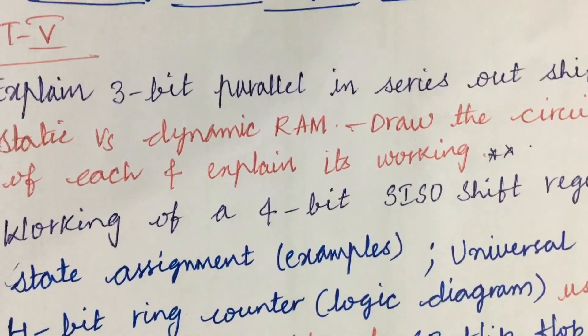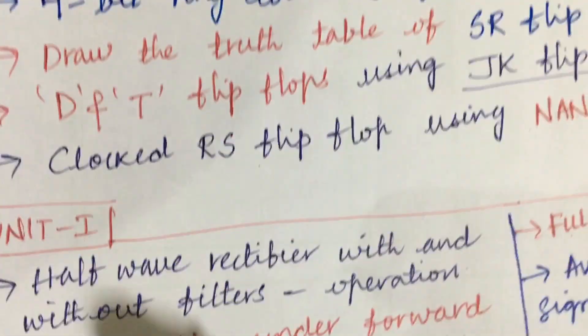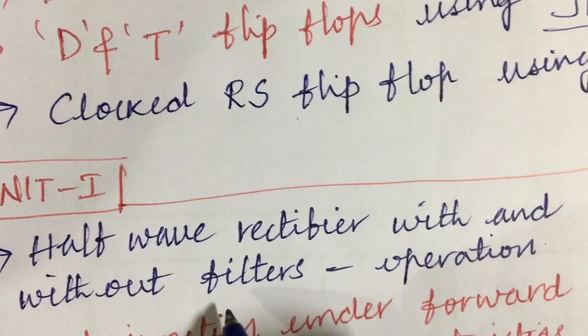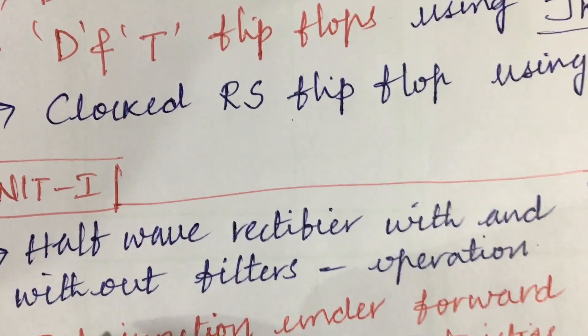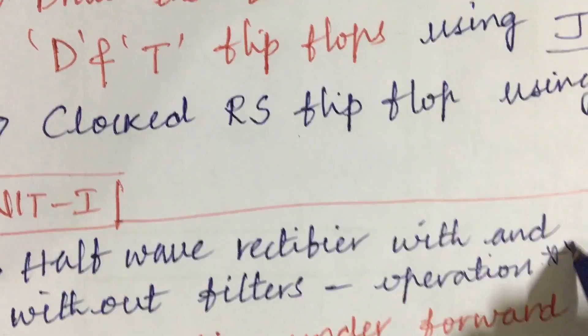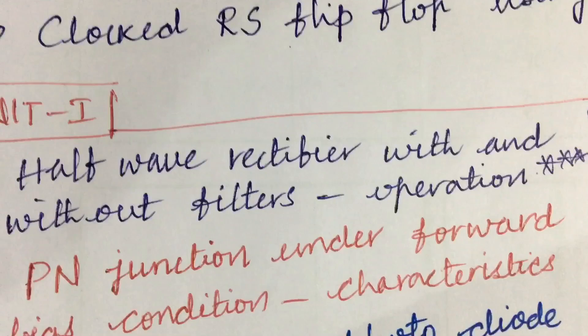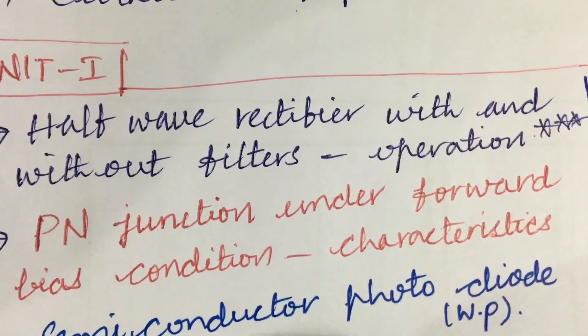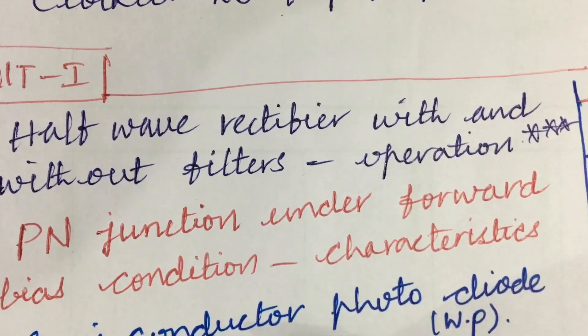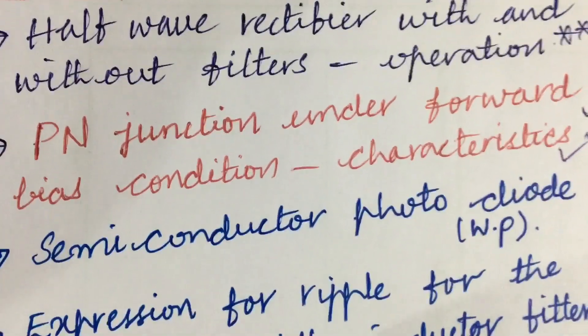Let's look at unit 1 important and gunshot questions. Explain the half-wave rectifier with and without filter and along with its operation is a gunshot question. PN junction under forward bias condition as well as reverse bias condition and its characteristics is also asked several times.